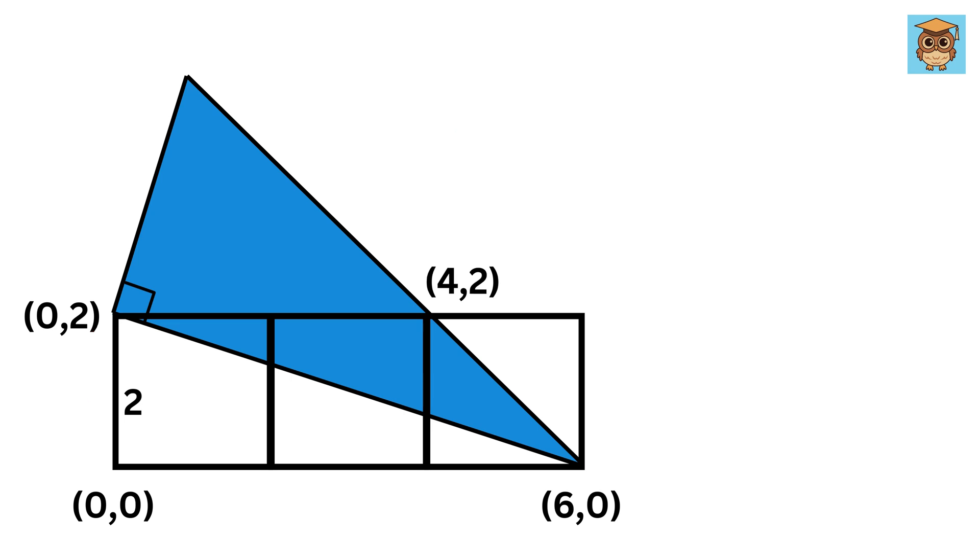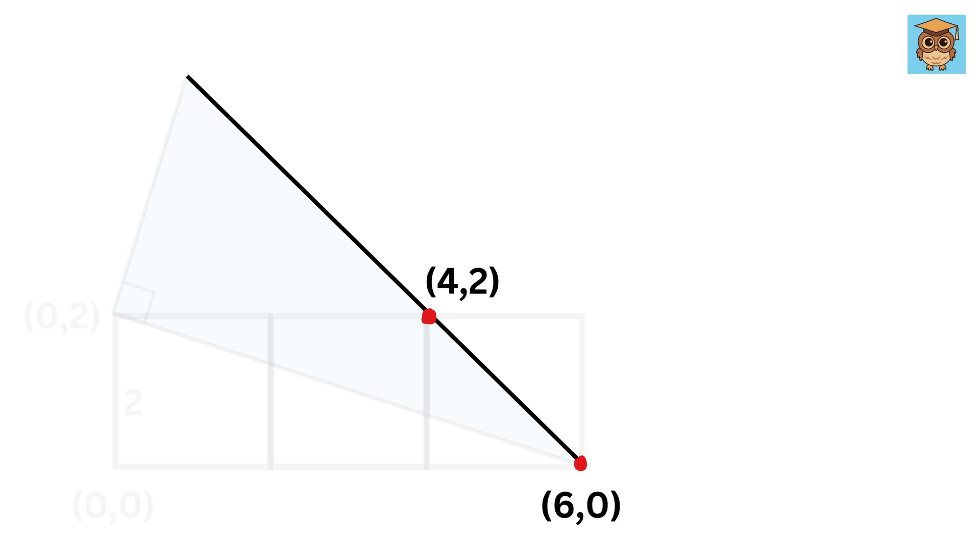Great. Now somehow we need to figure out the coordinate of this vertex of the triangle to solve this question. To do that, first consider this line. We have two points and using them we can find the equation of this line.